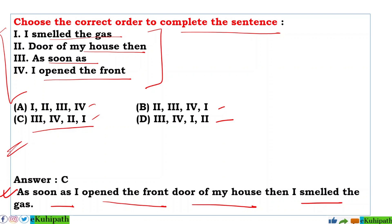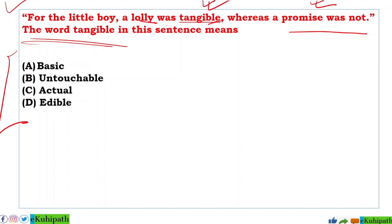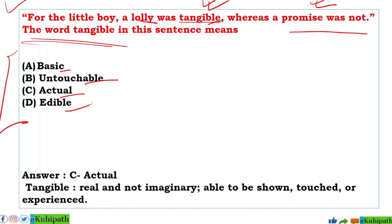Next: 'For the little boy, a lolly was tangible whereas the promise was not.' The word 'tangible' in this sentence means — A: basic, B: untouchable, C: actual, D: edible. The correct answer is C — actual. Tangible means real and not imaginary, able to be shown, touched, and experienced. The lolly pop is real, while the promise is not — so tangible means actual.